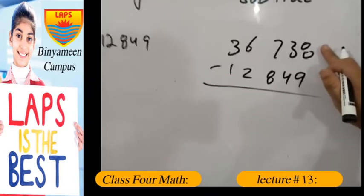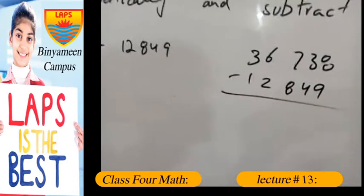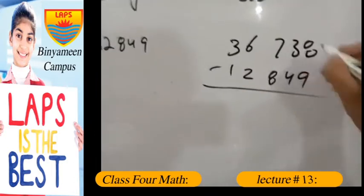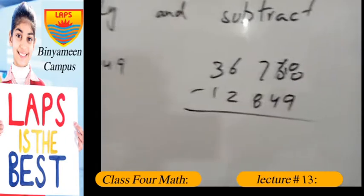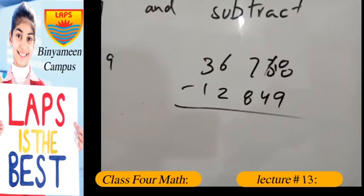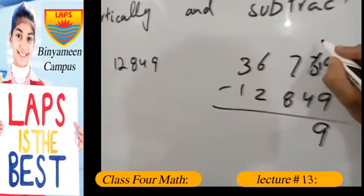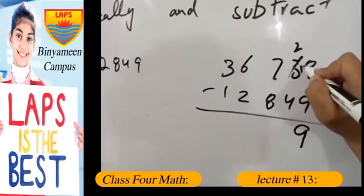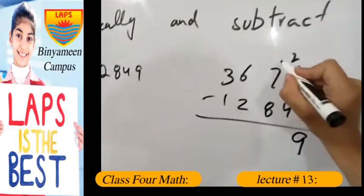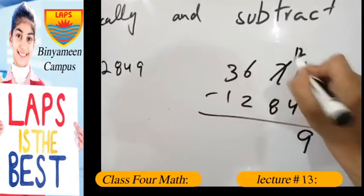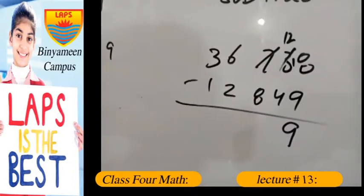know that 8 is smaller than 9, so we have to take a carry here. It becomes 18, and if we subtract 9 from 18, we get 9. And as we took carry from 3, two is remaining here, and we have to take a carry from 7. It becomes 12.